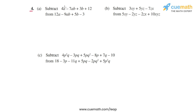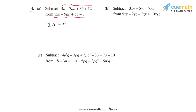In the first part, we have to subtract 4a minus 7ab plus 3b plus 12 from the expression 12a minus 9ab plus 5b minus 3. So let's write the second expression first: 12a minus 9ab plus 5b minus 3.